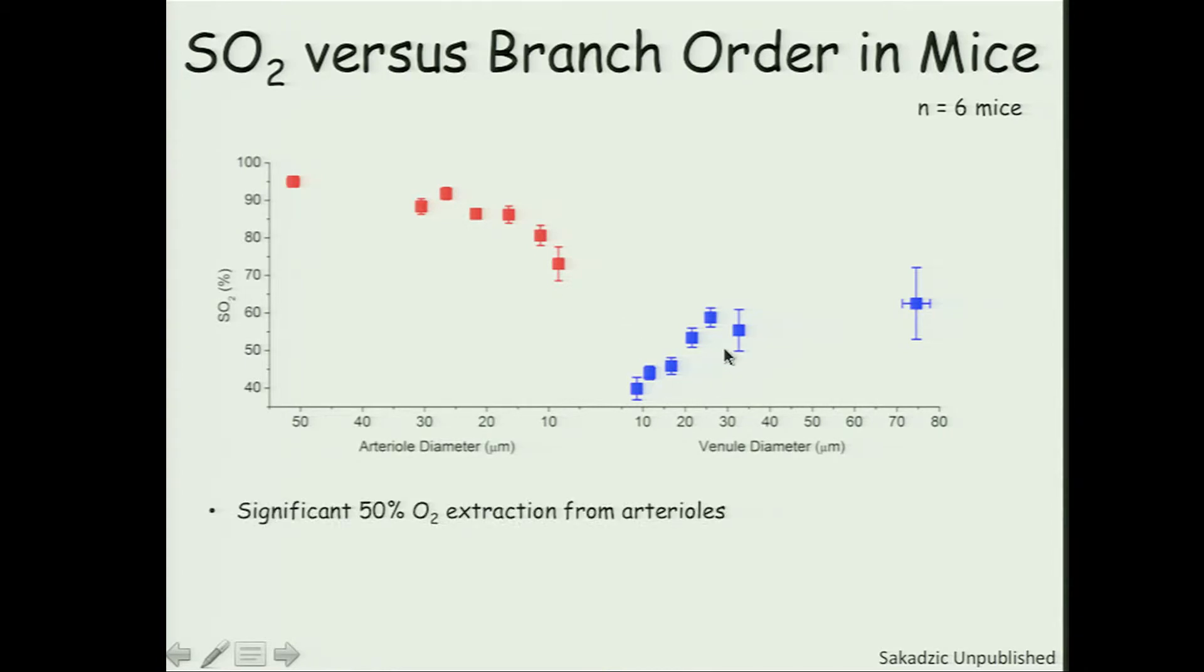The first thing that pops out is that actually significant oxygen is extracted from the arterials. So this goes against the textbook description of oxygen being delivered to tissue by capillaries. What we actually see from these data is that 50% of the oxygen being delivered to the tissue is actually coming from the arterials. So that's one interesting new physiological insight.